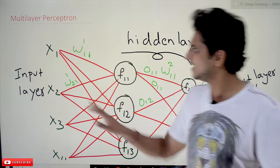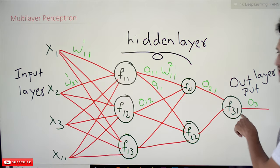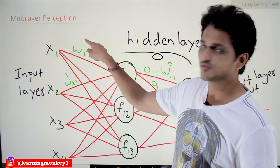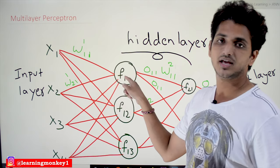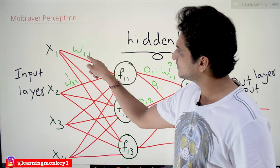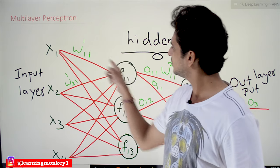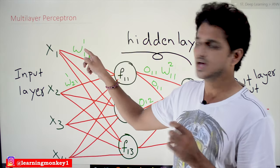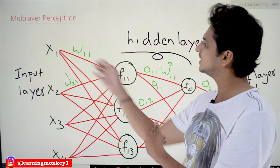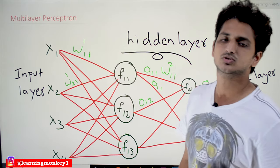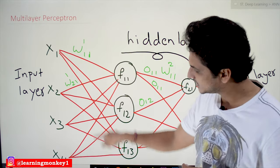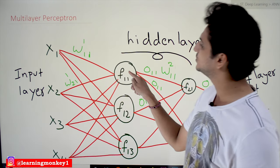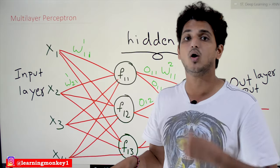The terminology we use here: this is the input layer, these are the hidden layers, and the last one is the output layer. The weights are denoted as W with a superscript and subscript — for example, W superscript 1 subscript 11 means the weight belonging to the first layer, going from the first input to the first neuron. The superscript indicates which layer the weight belongs to, and the subscript indicates the source input and destination neuron. Similarly, for x2 to the first neuron in the first layer, the weight is W superscript 1 subscript 21, and so on for all connections.